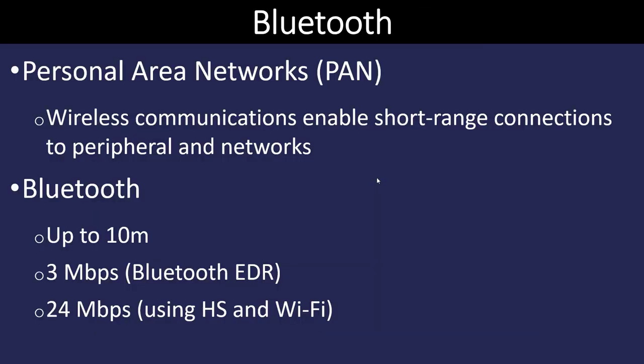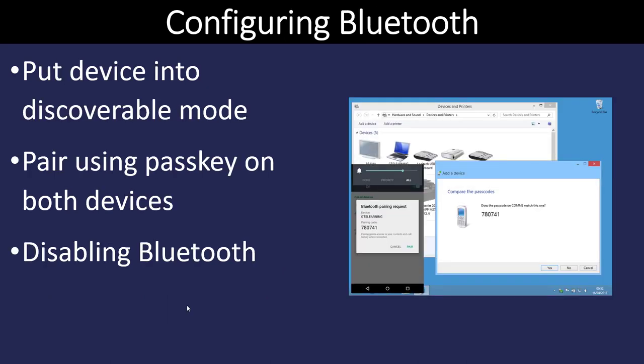Almost all notebook computers, tablets, and phones currently have Bluetooth built in, and many desktop computers do as well. A Bluetooth network is defined as a personal area network — devices connected in a very close range to you, up to 10 meters. Bluetooth has continued to release new specifications that increase its range and speed. When a Bluetooth device is put into discovery mode and pairs with other devices, it automatically discovers and configures itself — that is what is meant by self-discovery and self-configuration.